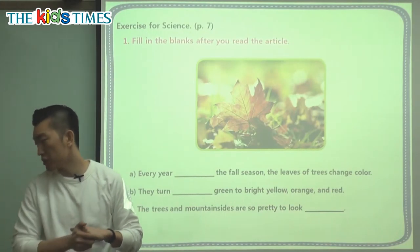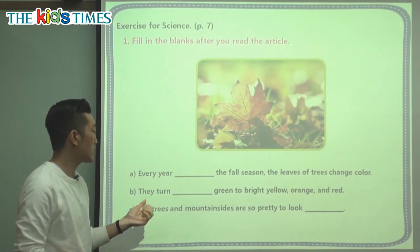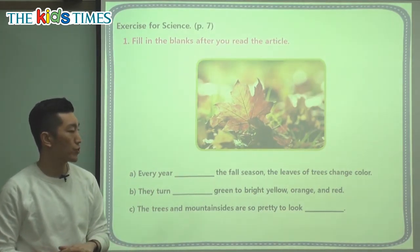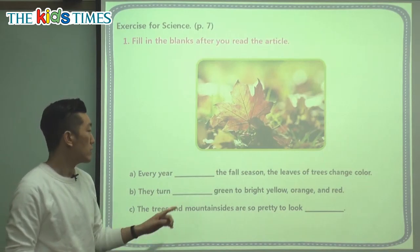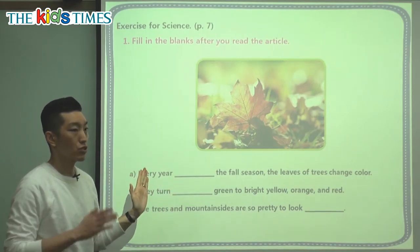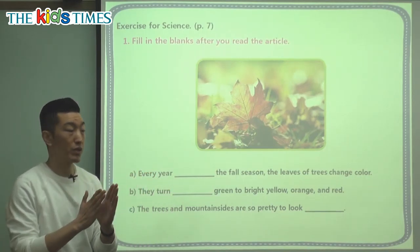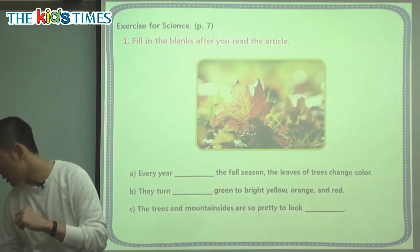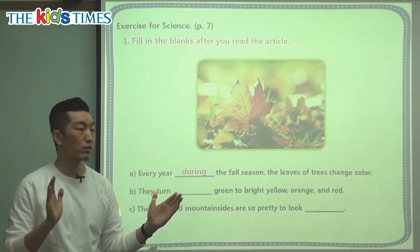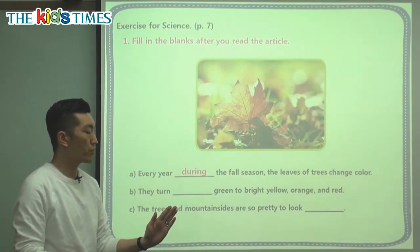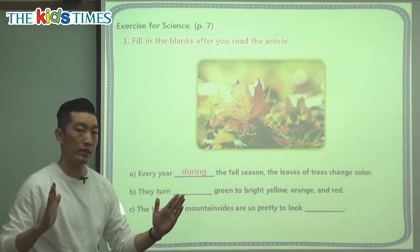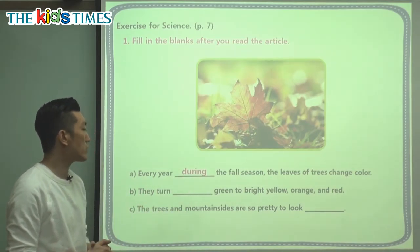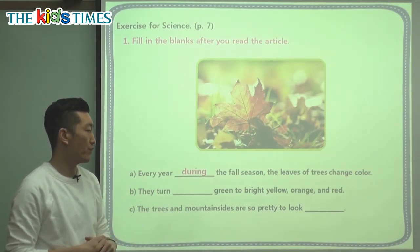If you look at the questions for today, let's fill in the blanks. It says: every year, [blank] the fall season, the leaves of trees change color. We're looking for a word that covers from the start of the fall to the end — all that time in between. So every year, during the fall season — that means in the time of the fall season — the leaves of trees change color.